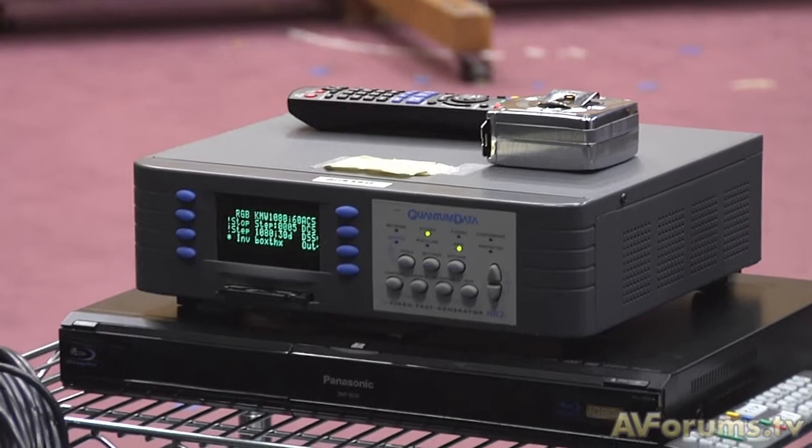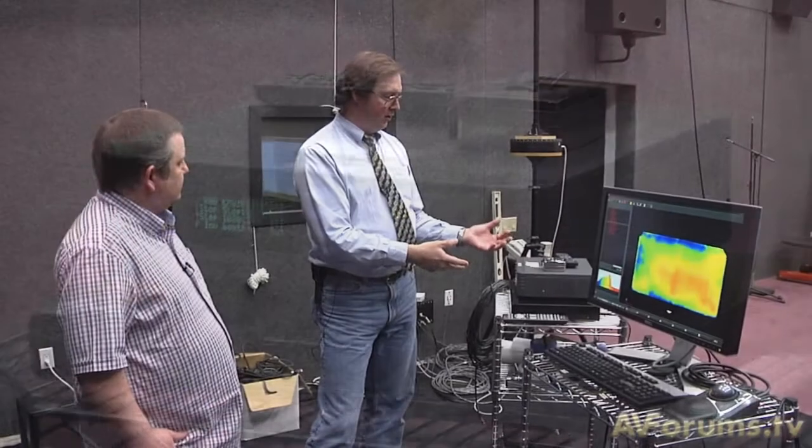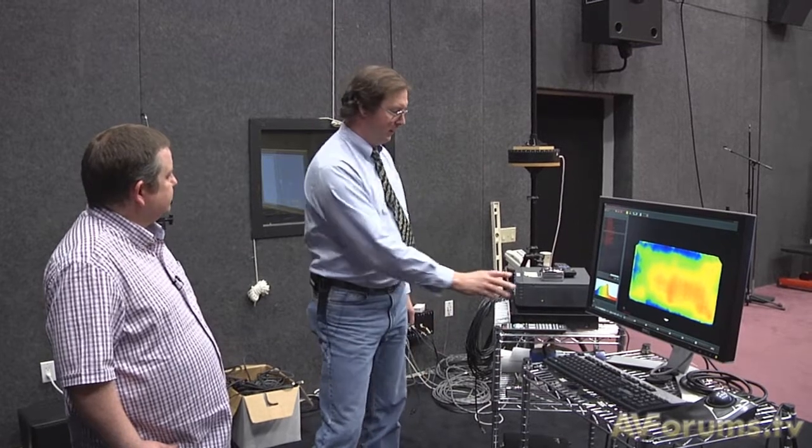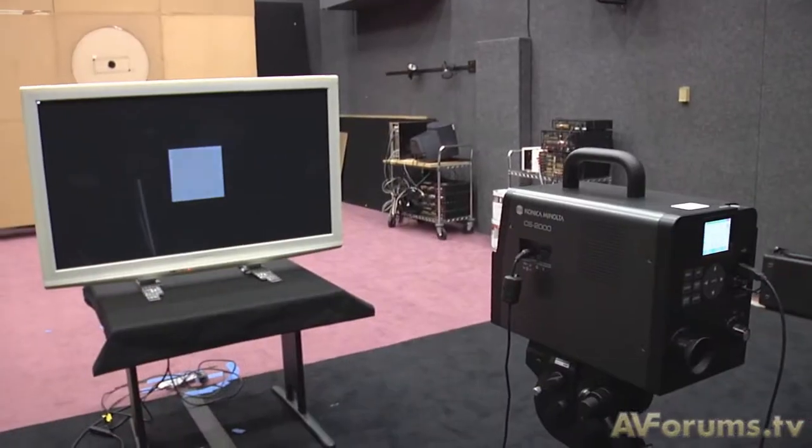Now what we generally do is we will set the white and black level so that we get the range we want from the brightest of THX cinema mode of 35 footlamberts to as dark as is allowable to still see like a 2% box.